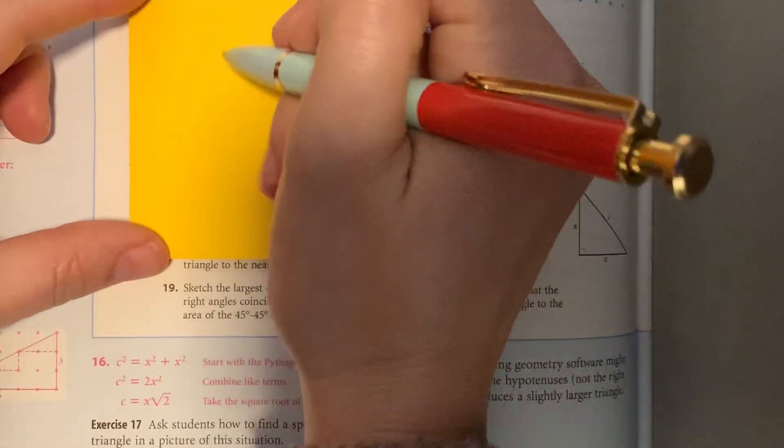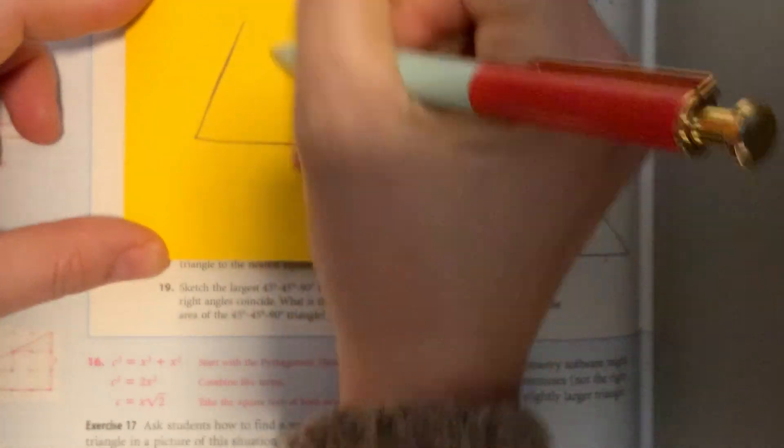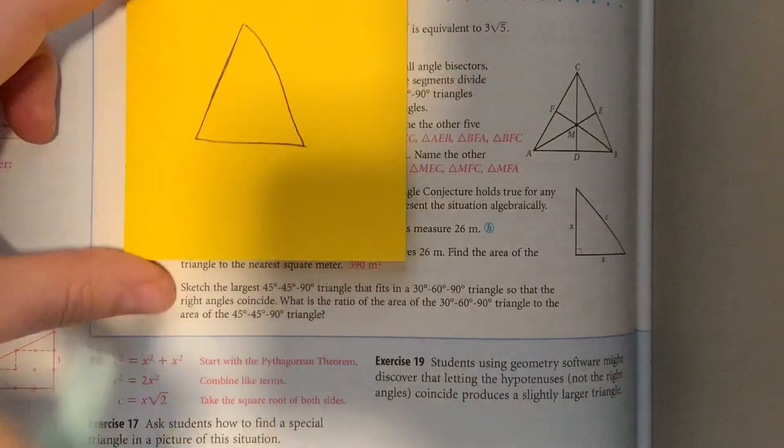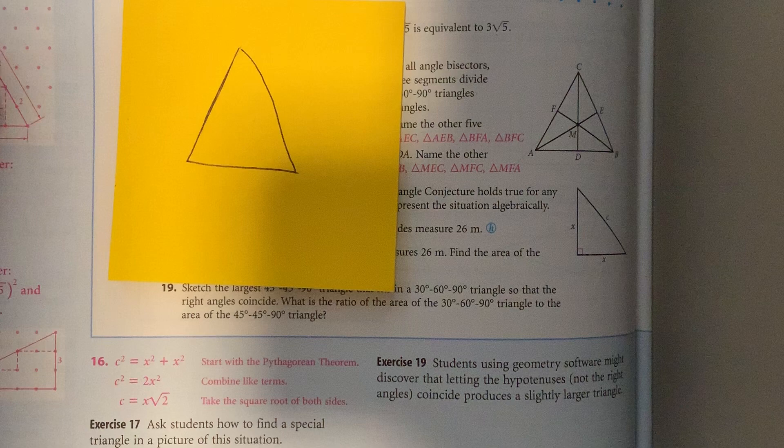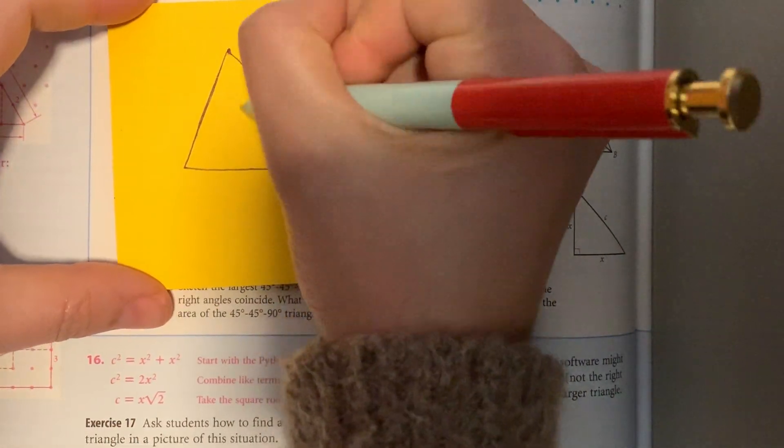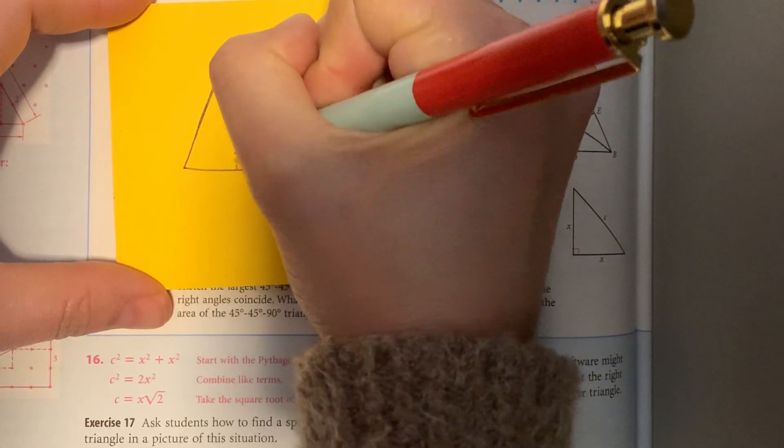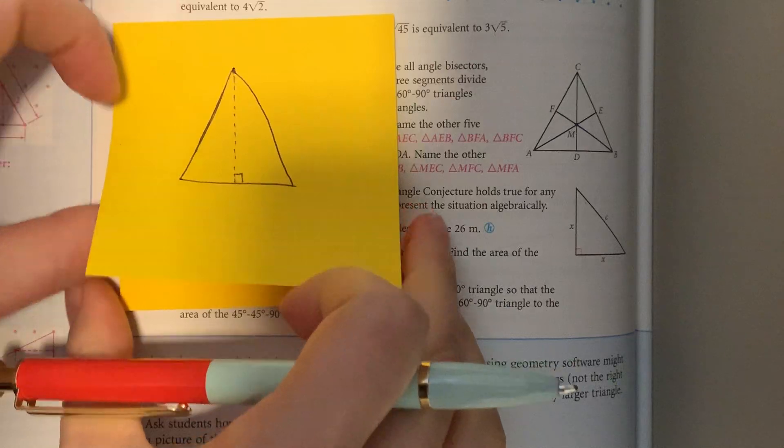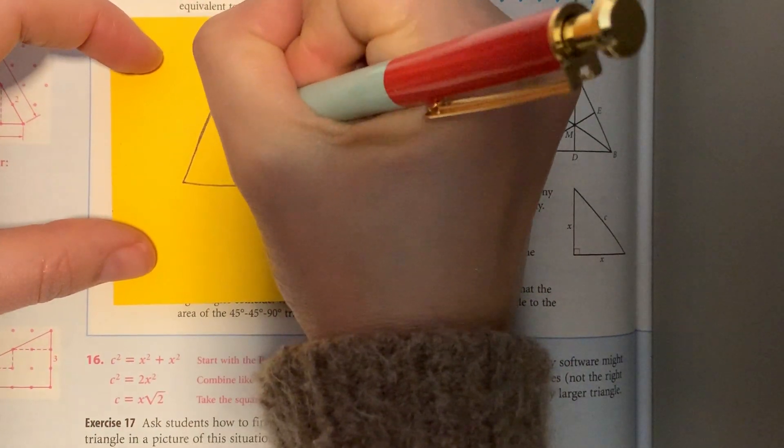So we have an equilateral triangle, not drawn to scale. It has an altitude of 26 meters. An altitude goes from a vertex and meets the opposite side at 90 degrees. So this is 26 meters.